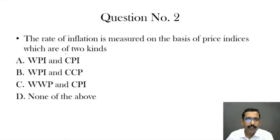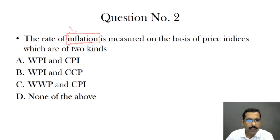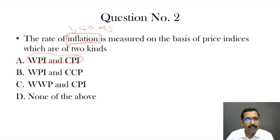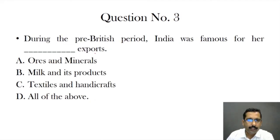The second question is: the rate of inflation is measured on the basis of price indices, which are of two kinds. Inflation is a situation where the value of goods increases and the value of money decreases. We generally consider WPI (Wholesale Price Index) and CPI (Consumer Price Index) to measure this. The answer for this question is option A.